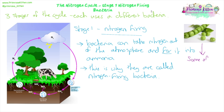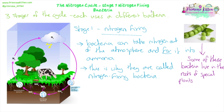Some of these bacteria just live in the soil, and some can be found living inside the roots of certain plants. Examples include peas, beans, and clover — plants we call legumes. They have these special nitrogen-fixing bacteria in their roots to help them grow in soils where there isn't a lot of nitrogen, which is a very good adaptation.